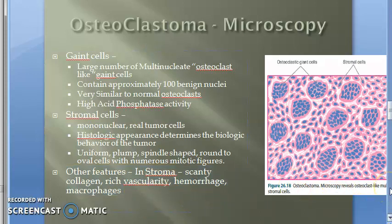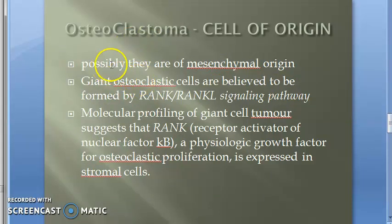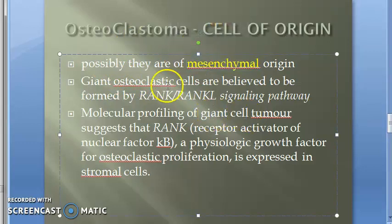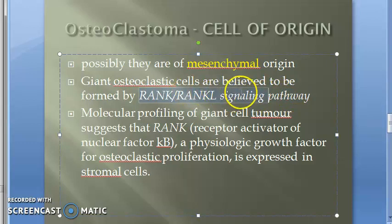In this video we want to look at the cell of origin. The exact cell of origin is not known, but there is a guess that it could be mesenchymal in origin. The giant osteoclasts are believed to form because of the RANK/RANKL signaling pathway. RANK stands for Receptor Activator of Nuclear Factor kB.